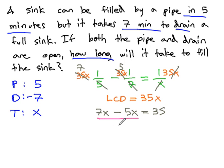Combining like terms, we end up with two x equals thirty-five, and we can quickly solve by dividing both sides by two. And just as a decimal, x is equal to seventeen point five minutes.